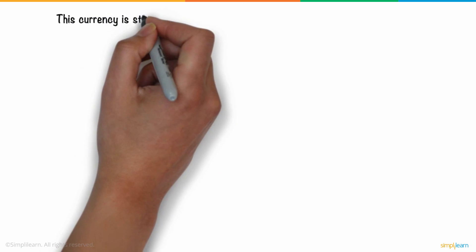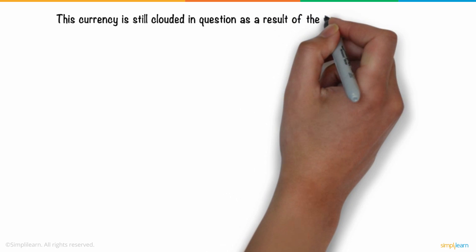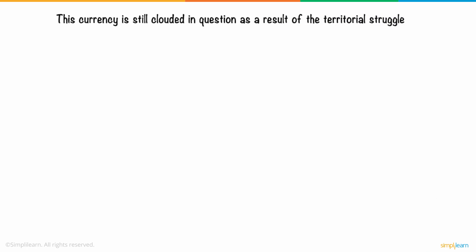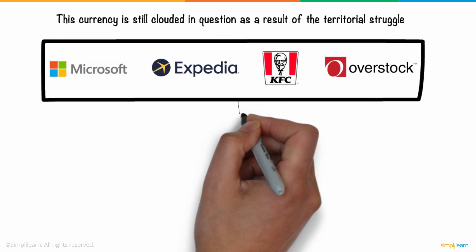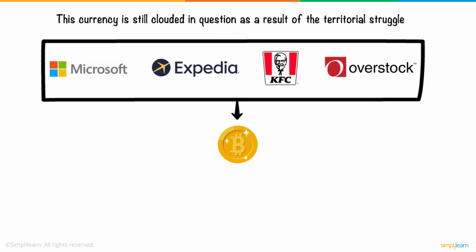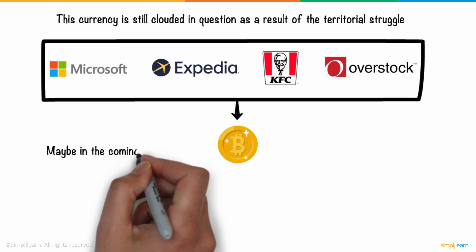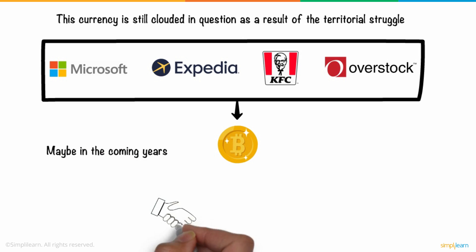However, this currency is still clouded in question as a result of the territorial struggle. Many top companies like Microsoft, Expedia, KFC, and Overstock believe in Bitcoin and use it as a currency mode. And maybe in the coming years, it will gain more people's trust and ultimately revolutionize the whole economic system of the world.